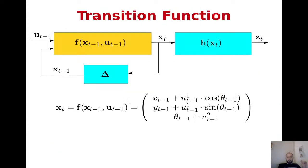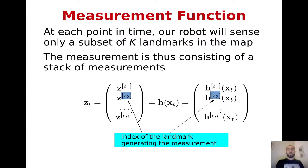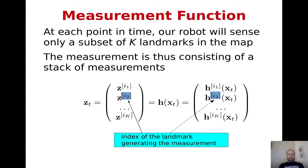The transition function is the same — the unicycle model integrated using Euler integration. The observation function is also the same: we take the inverse transform of the current robot pose estimate to bring a landmark from the world frame into the robot frame, giving the predicted observation. If we see K landmarks, we stack observations into a vector and compare with the set of observations at that time instant, performing data association between landmarks and observations.